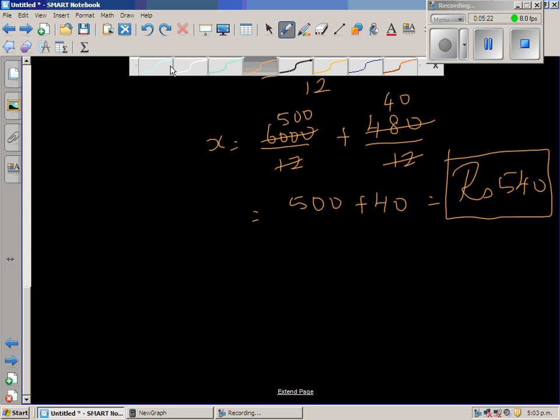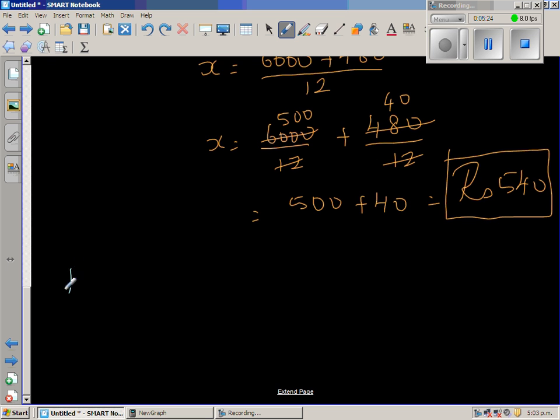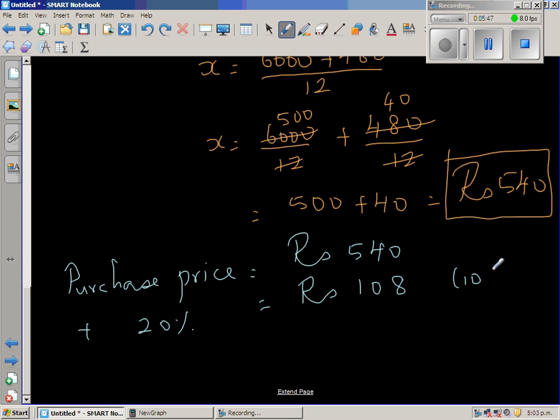So let's confirm whether the answer is right. The purchase price is 540. So if you add 20% of this, 10% is 54, so 20% is 108. This is how I calculate: 10% is 54, so 20% is double of 54, which is 108.